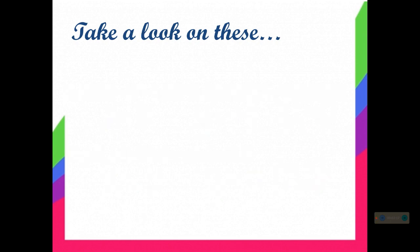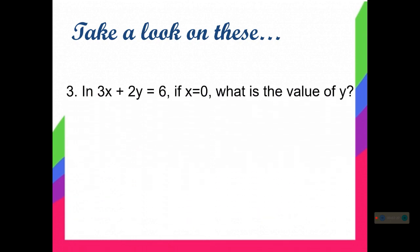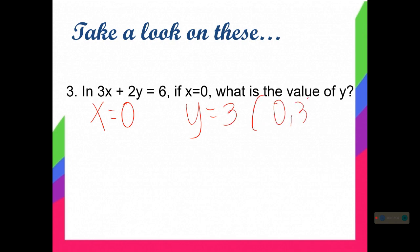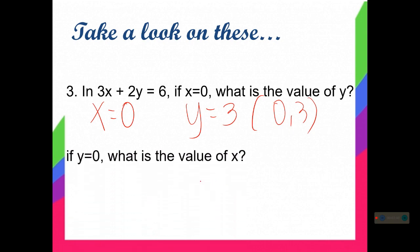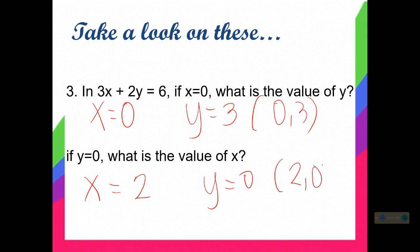The third one: in the equation 3x plus 2y equals 6. If x is equal to 0, what is the value of your y? We have y is equal to 3. So our ordered pair will be 0, 3. How about if y is equal to 0, what is the value of x? Our x here will be 2. So the ordered pair will be 2, 0.